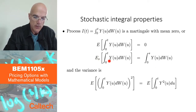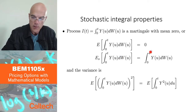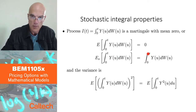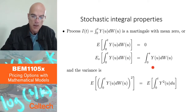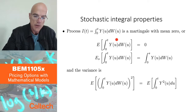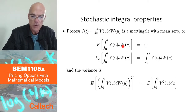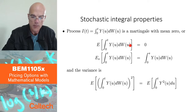The conditional expectation of the future value at time t is equal to today's value at time s. The mean is zero — that's this first equation — and that's often useful to remember when we compute expected values.